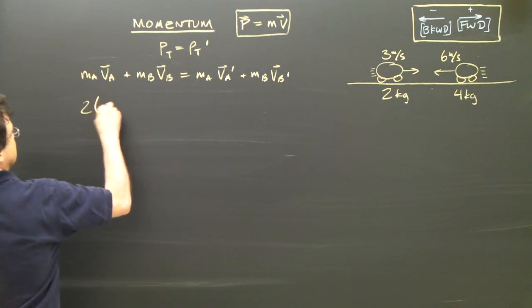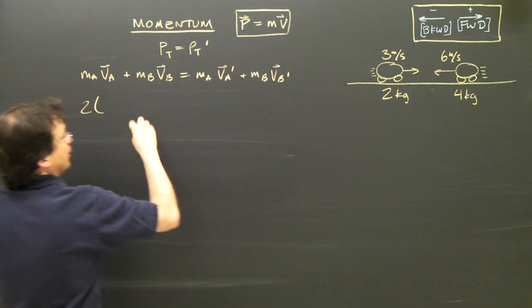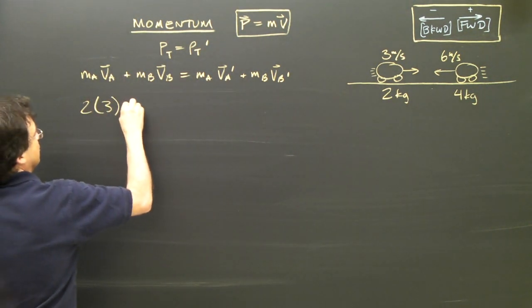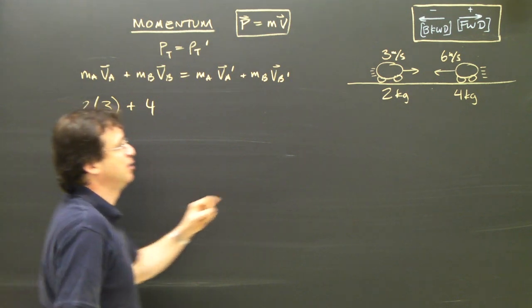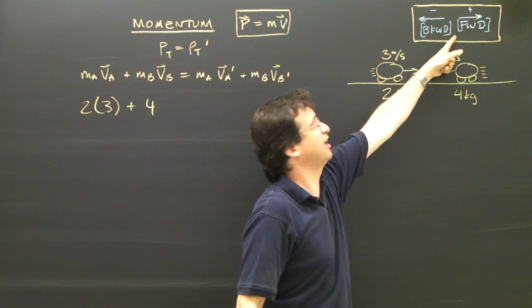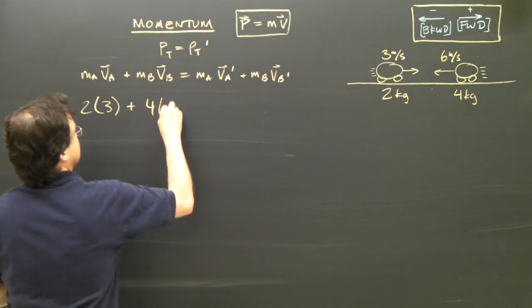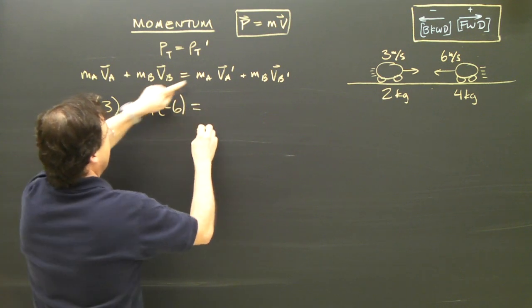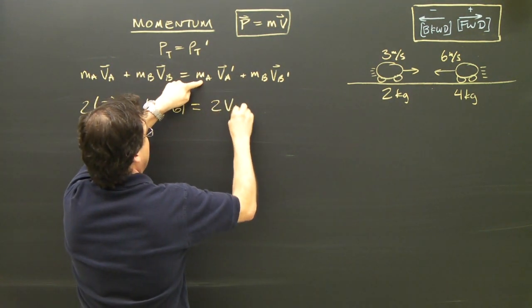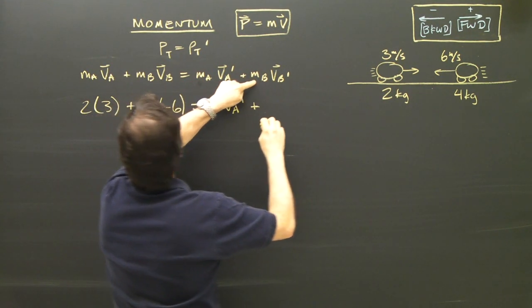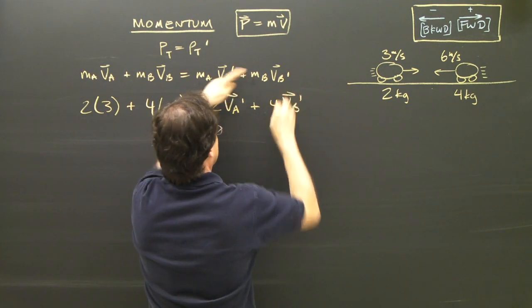So I plug in the numbers. Two times A before is three, plus four, and B is going backwards. That's negative. So I've got to account for that. That's negative six. And then afterwards, I've got 2VA afterwards, plus 4VB afterwards.